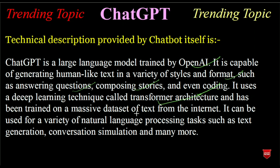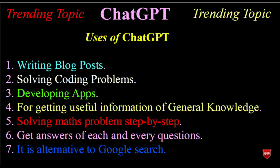It has been trained on a massive dataset of text from the internet. It can be used for a variety of natural language processing tasks such as text generation, conversation simulation, and many more. That is the technical description provided by ChatGPT itself. Now I will discuss about the usage of ChatGPT. The first usage is writing blog posts.